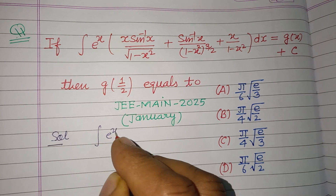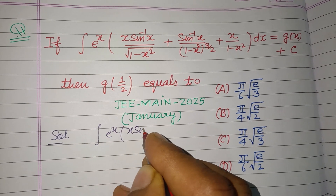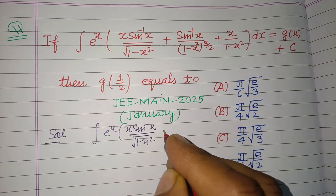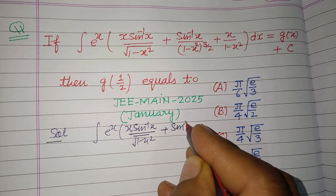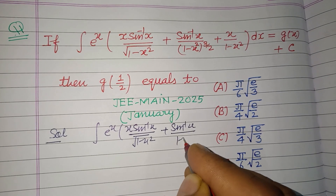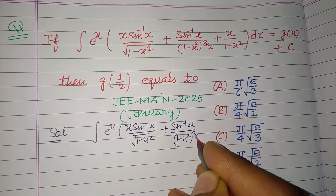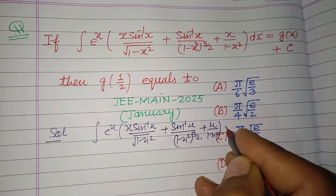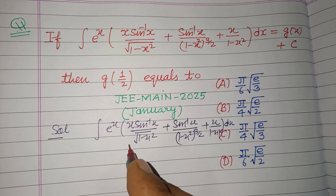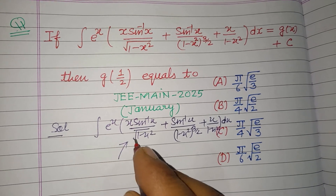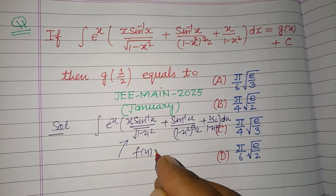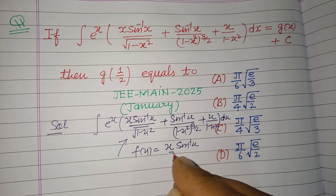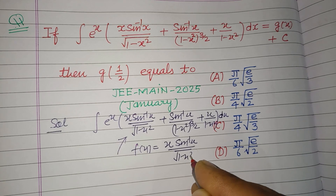So students, here we have the integrand with e^x times [x·sin⁻¹x / √(1-x²) + sin⁻¹x / (1-x²)^(3/2) + x/(1-x²)] dx. We take f(x) = x·sin⁻¹x / √(1-x²).